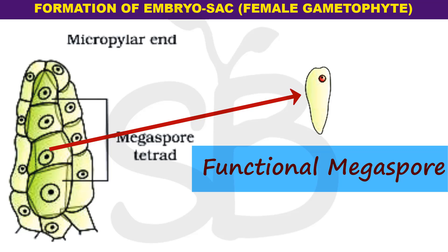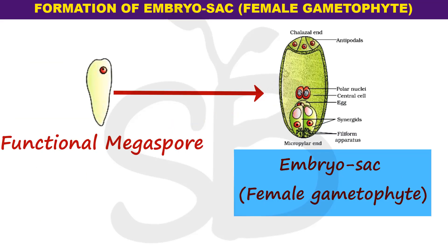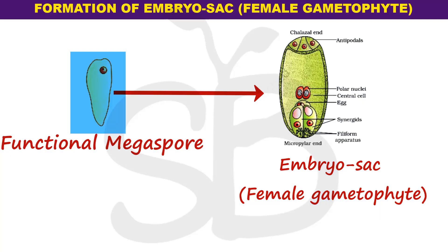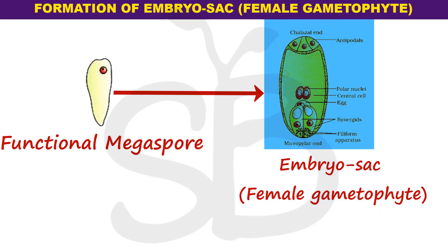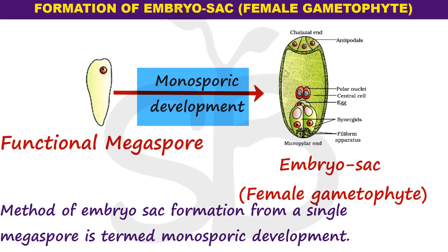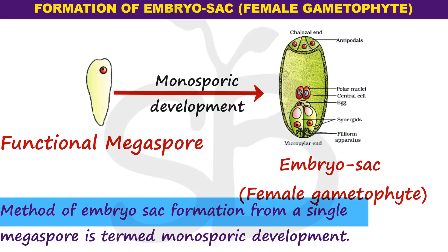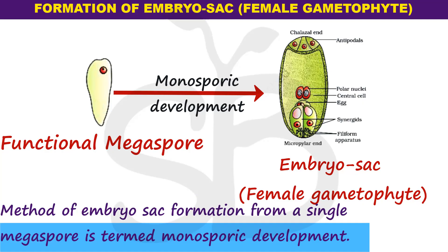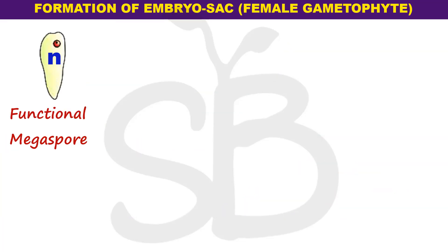That is the functional megaspore. Now this megaspore divides and forms the embryo sac — the female gametophyte. The method of embryo sac formation from a single megaspore is termed monosporic development.